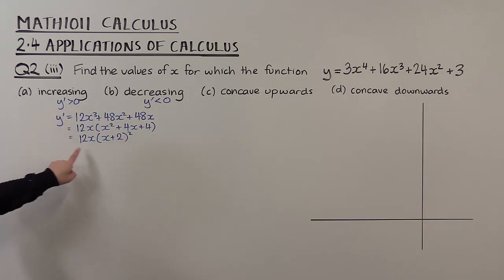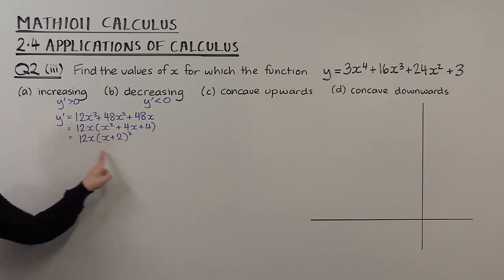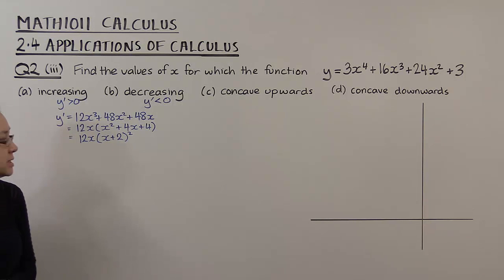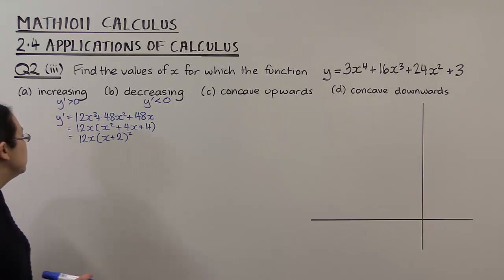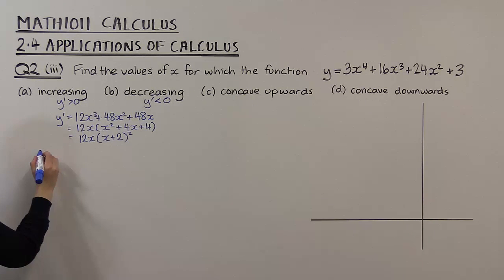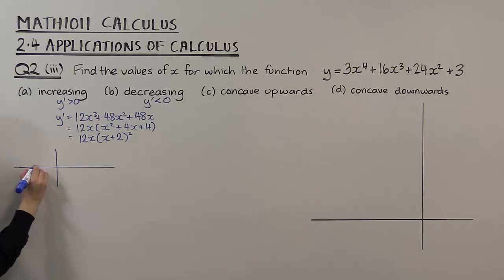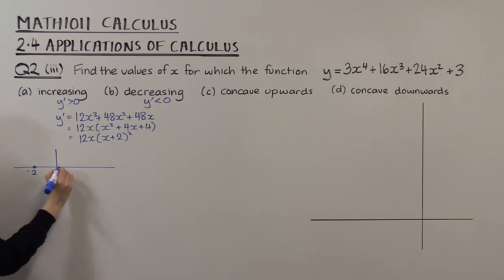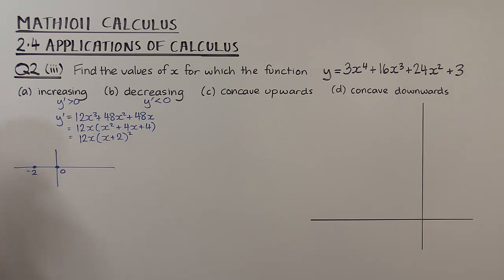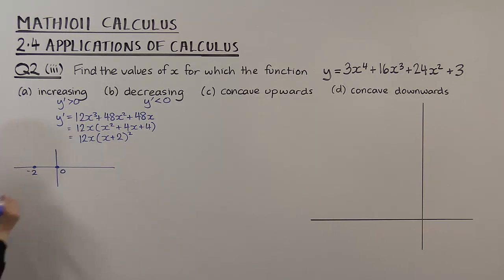Now if we want to solve this being greater than zero or less than zero, we're going to need a little sketch of that graph. It's got a double root at minus 2 and a single root at zero. It's a cubic with a positive x³ leading term.